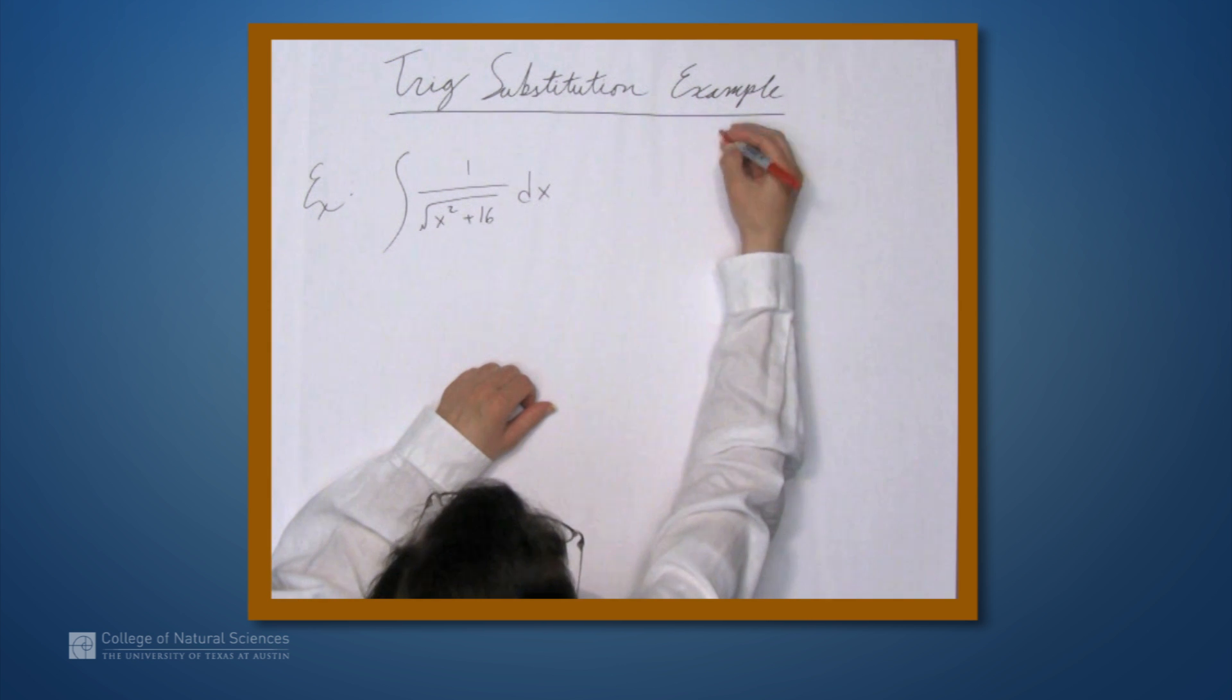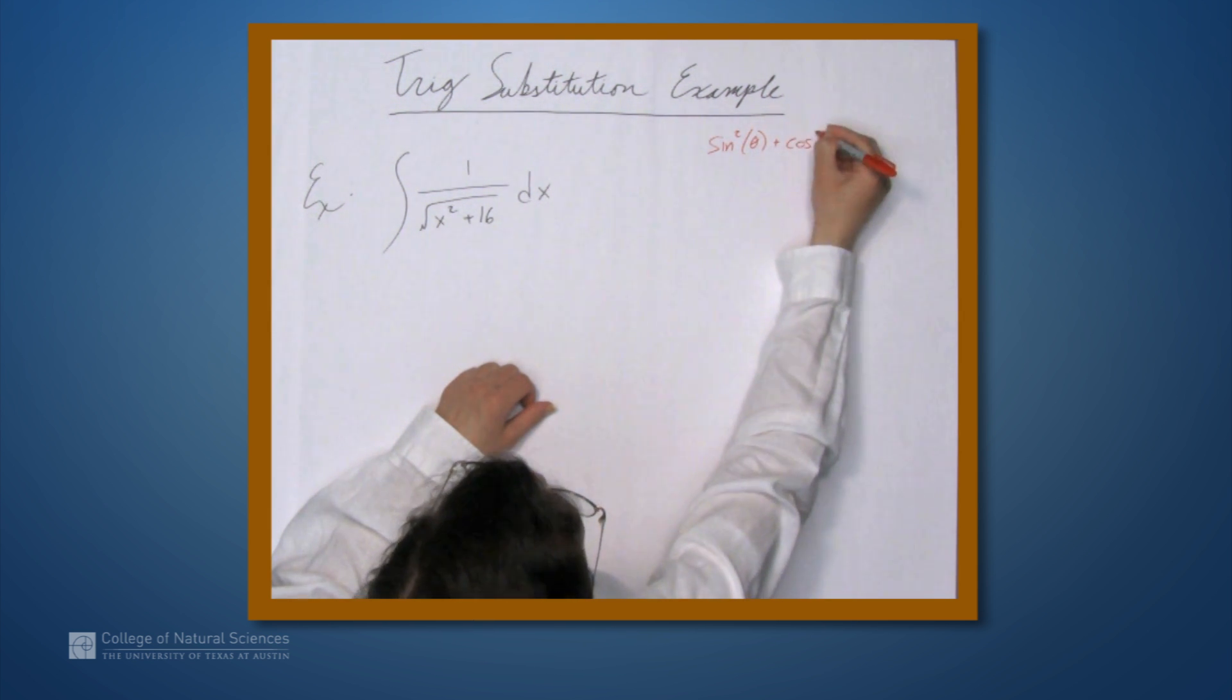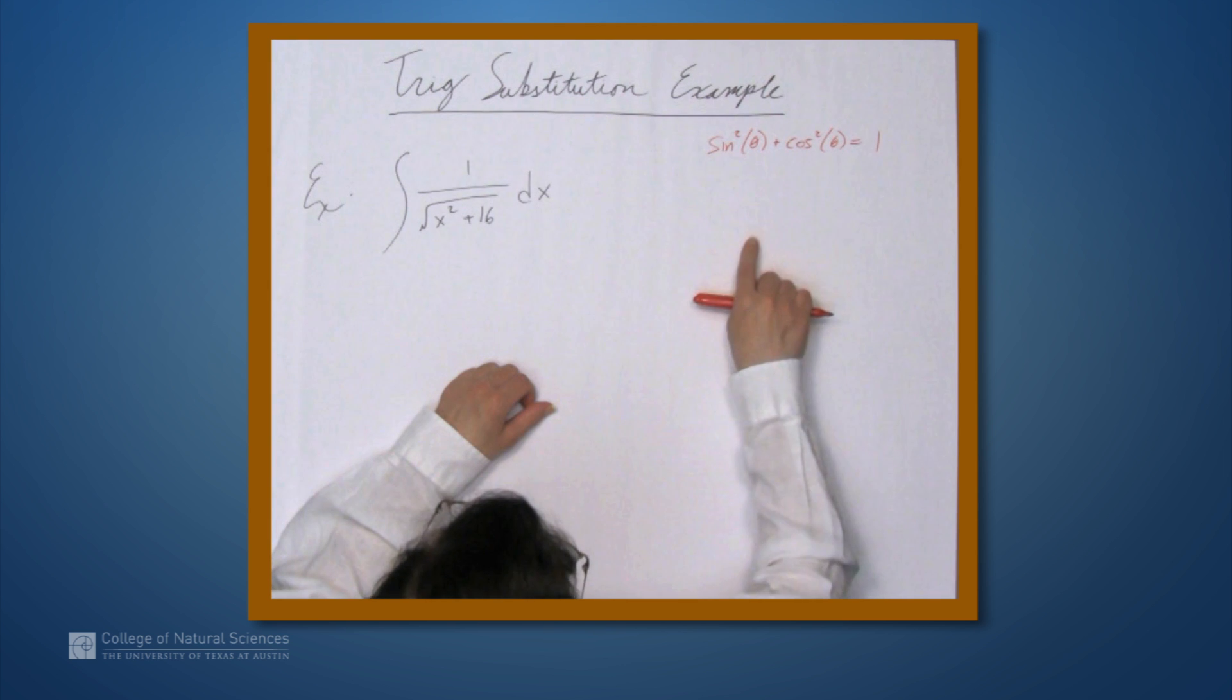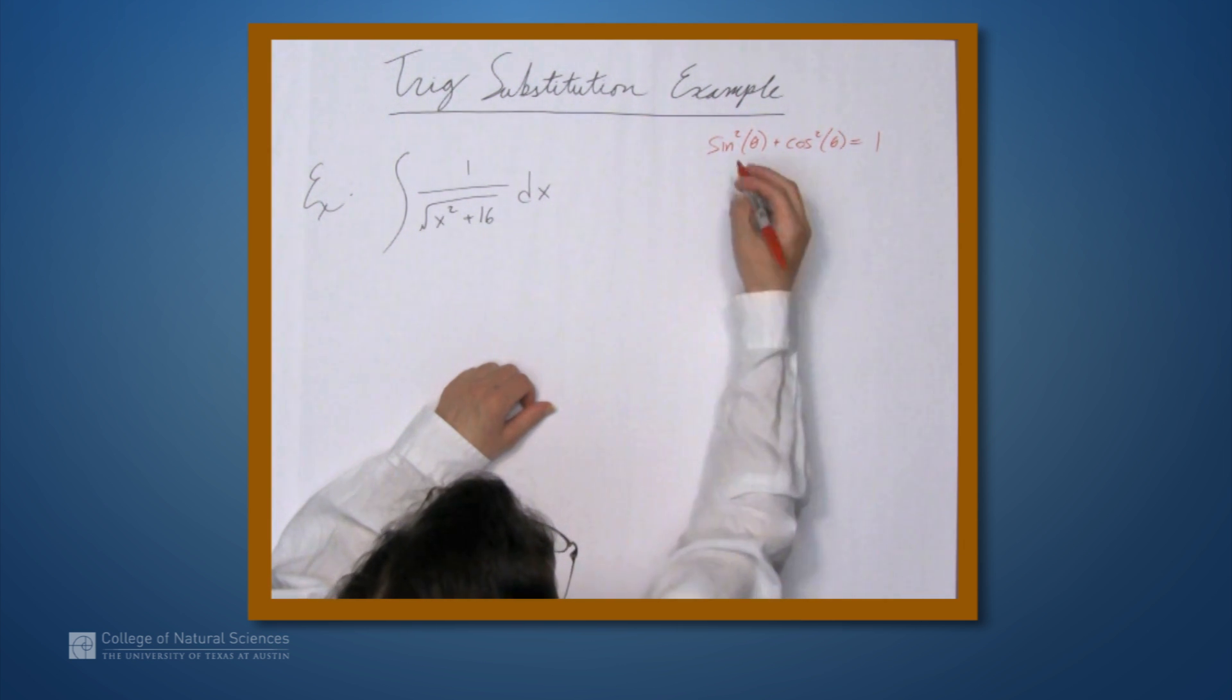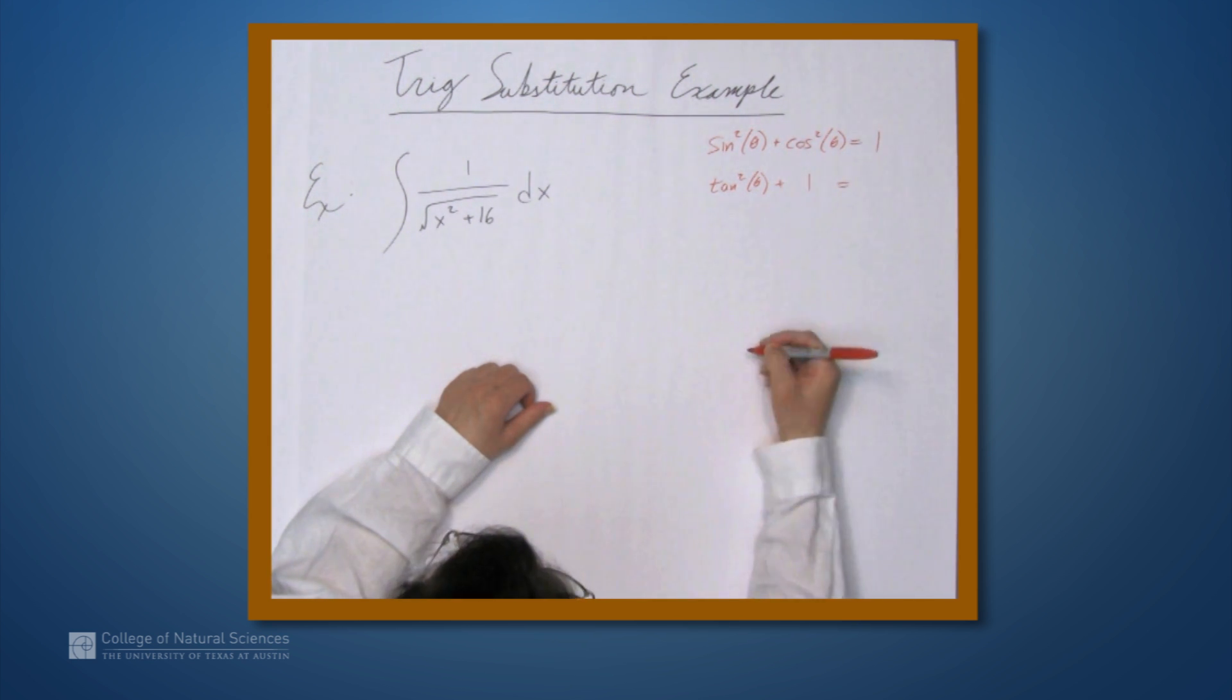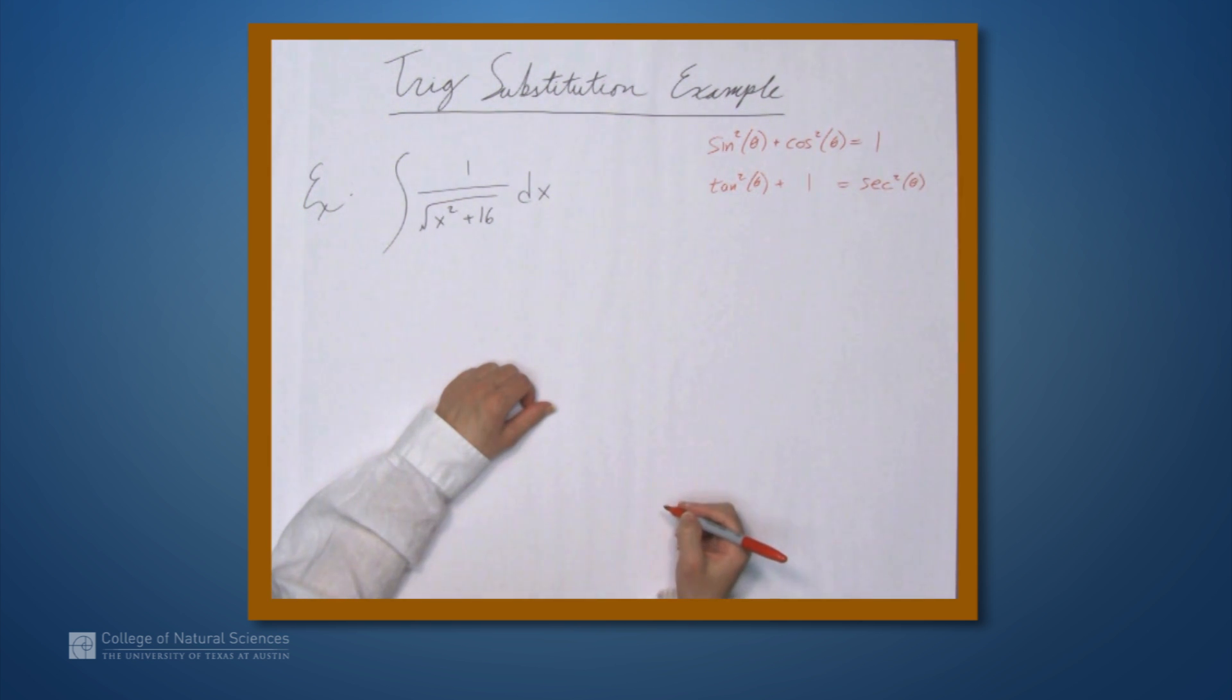And I have a really bad memory. I can never really remember what it is. So I always start with sine squared theta plus cosine squared theta equals 1. That much I know. And then I'll divide everything on both sides by cosine squared. So sine squared over cosine squared becomes tangent squared theta. Cosine squared over itself becomes 1. And 1 over cosine squared becomes secant squared theta.